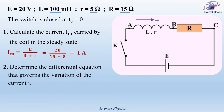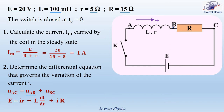Question number two: determine the differential equation that governs the variation of the current I. We will apply Kirchhoff's voltage law and follow the positive sense. So we have UAC equal to UAB plus UBC. UAC is the voltage across the ideal battery, equal to E. UAB is the voltage across the coil, so UAB is IR plus L·dI/dt. Similarly, UBC is equal to plus RI. Rearranging: L·dI/dt plus I·(capital R plus small r) is equal to E. This is the first-order differential equation that governs the variation of the current during its growth.